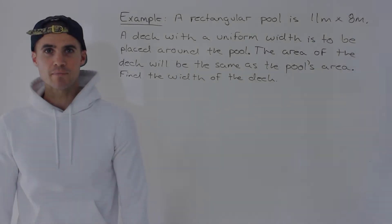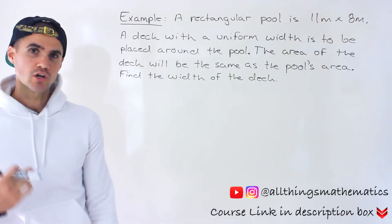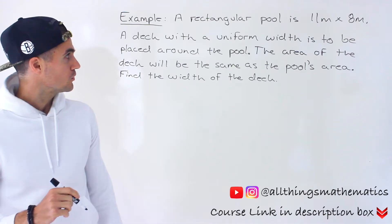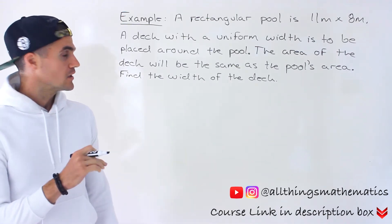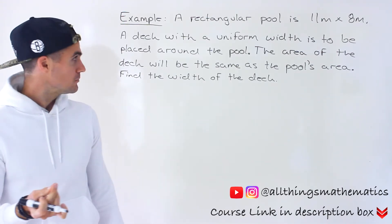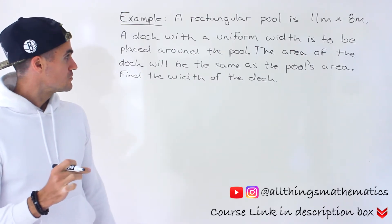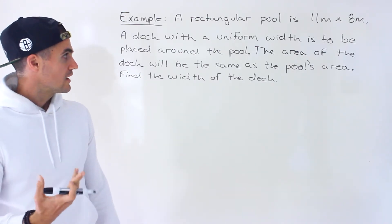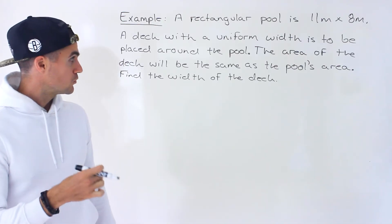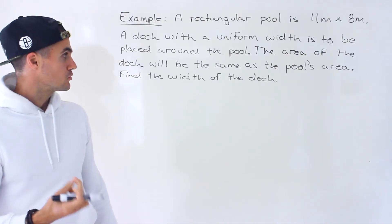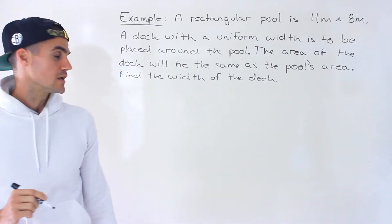Welcome back, Patrick here. Moving on to another quadratic word problem. We're told that a rectangular pool is 11 meters by 8 meters, and a deck with a uniform width is to be placed around the pool. The area of the deck will be the same as the pool's area, and we have to find the width of the deck.